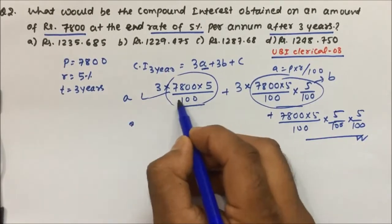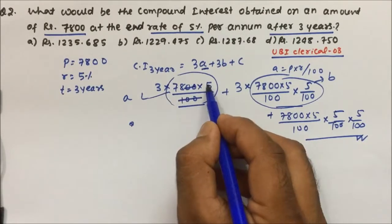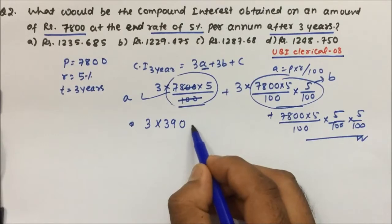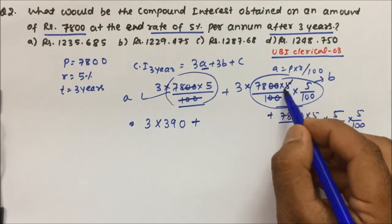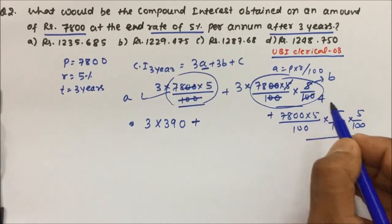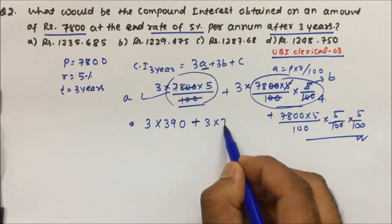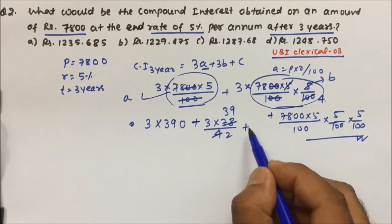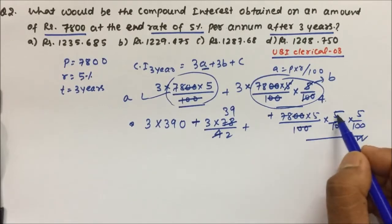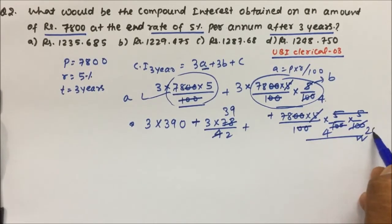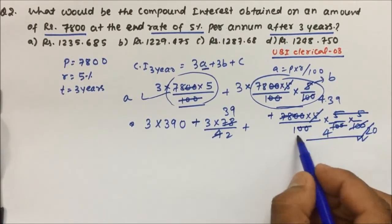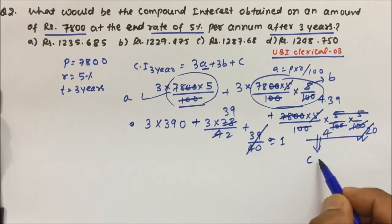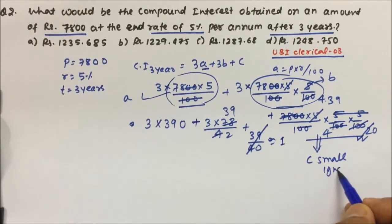Simplifying: 5 into 8 is 40, 5 into 7 is 35 plus 4 is 39, multiplied by 3. Then cancelling zeros: 25 times 4, 5 times 20, 2 times 39, giving 39 divided by 40, which is approximately equal to 1. So the value of c will be very small and can be ignored.